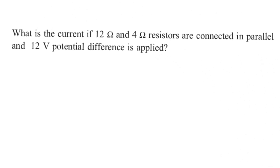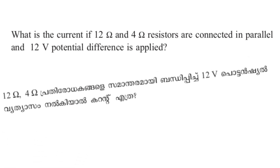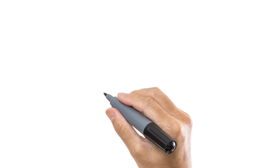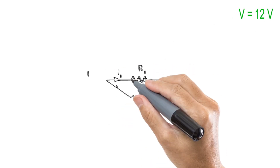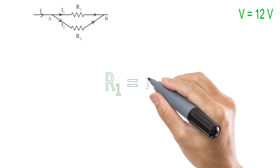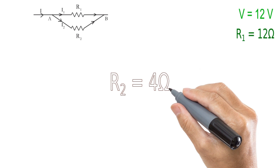What is the current if 12 ohm and 4 ohm resistors are connected in parallel and 12 volt potential difference is applied? R1 is 12 ohm and R2 is 4 ohm.